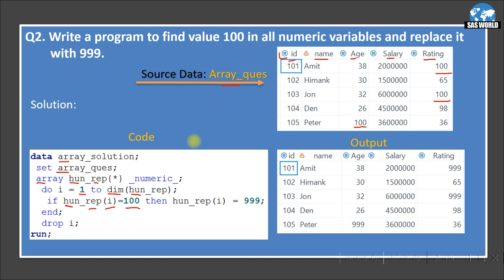I run a loop from i = 1 to dim(hun_rep). For each iteration, I check if the element at position i equals 100. When i is 1, the first element is ID — it is not 100, so condition is false. The loop continues checking each variable. When i is 4, the fourth element is 'rating' and its value is 100, so the condition is true and it replaces that position with 999. The loop iterates and finds all 100 values across variables, replacing them with 999.